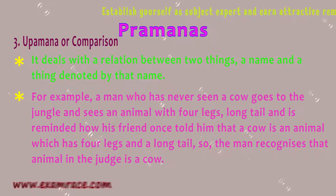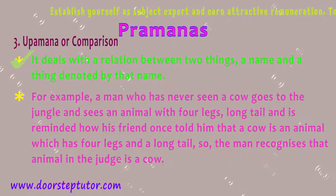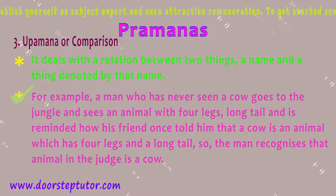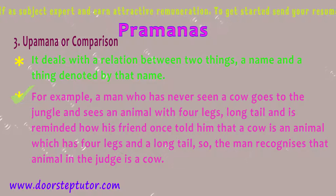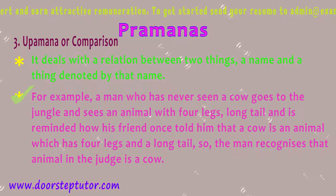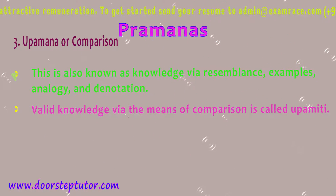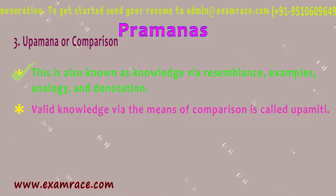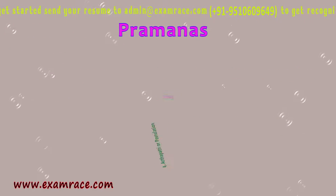Number 3: Upamana, or Comparison. It deals with the relation between two things — a name and the thing denoted by that name. For example, a man who has never seen a cow goes to the jungle, sees an animal with four legs and a long tail, and is reminded that his friend once told him a cow is an animal with four legs and a long tail. So the man recognizes the animal in the jungle is a cow. This is also known as knowledge via resemblance, analogy, and denotation. Valid knowledge via comparison is called Upamiti.